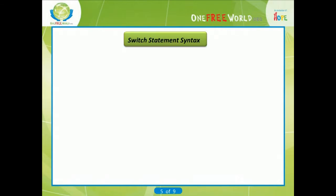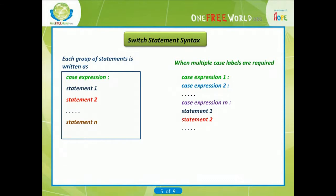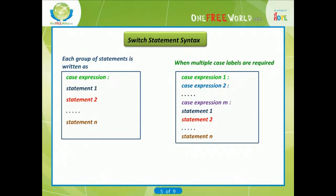Switch statement syntax: in general terms, each group of statements is written as: case expression, Statement 1, Statement 2, ... Statement N. Or, when multiple case labels are required: case expression 1, case expression 2, ... case expression M, Statement 1, Statement 2, ... Statement M. Where expression 1, expression 2, expression M represent constant integer-valued expressions — usually either an integer constant or a character constant. Each individual statement following the case labels may be either simple or complex. When the switch statement is executed, the expression is evaluated and control is transferred directly to the group of statements whose case label value matches the value of the expression.